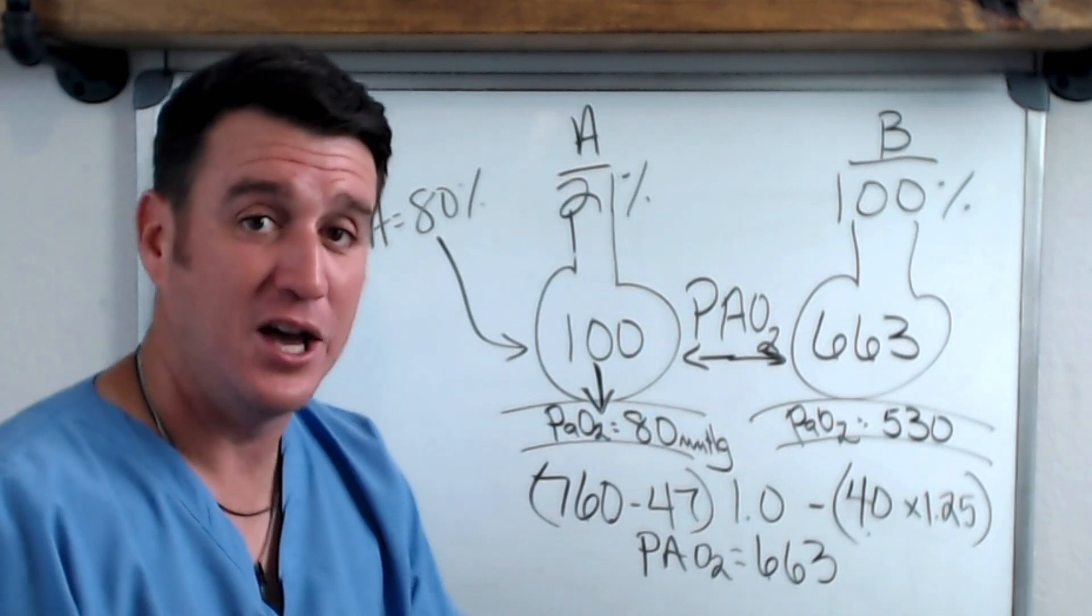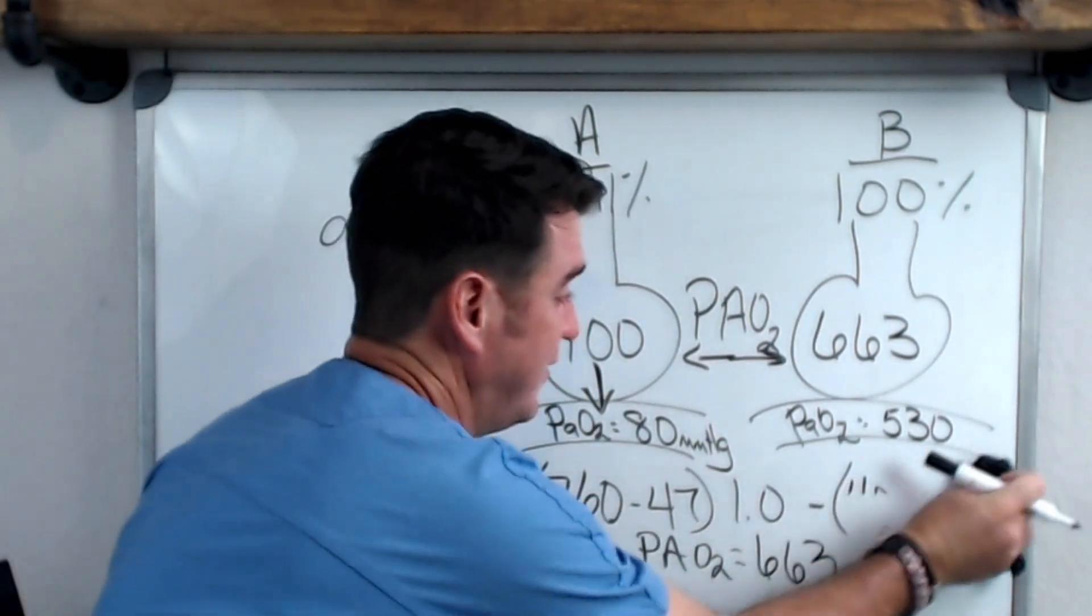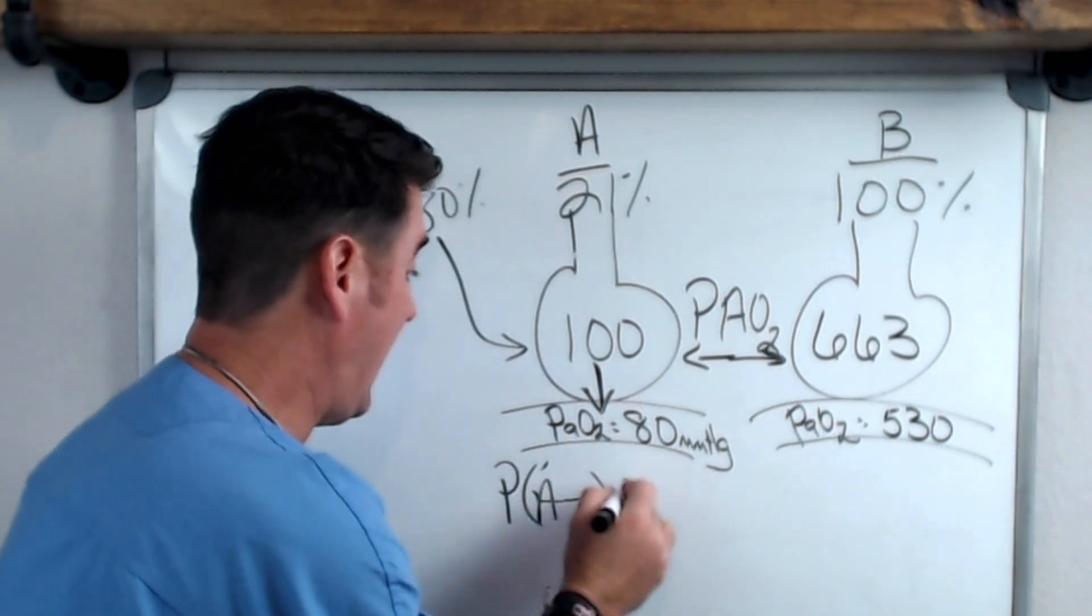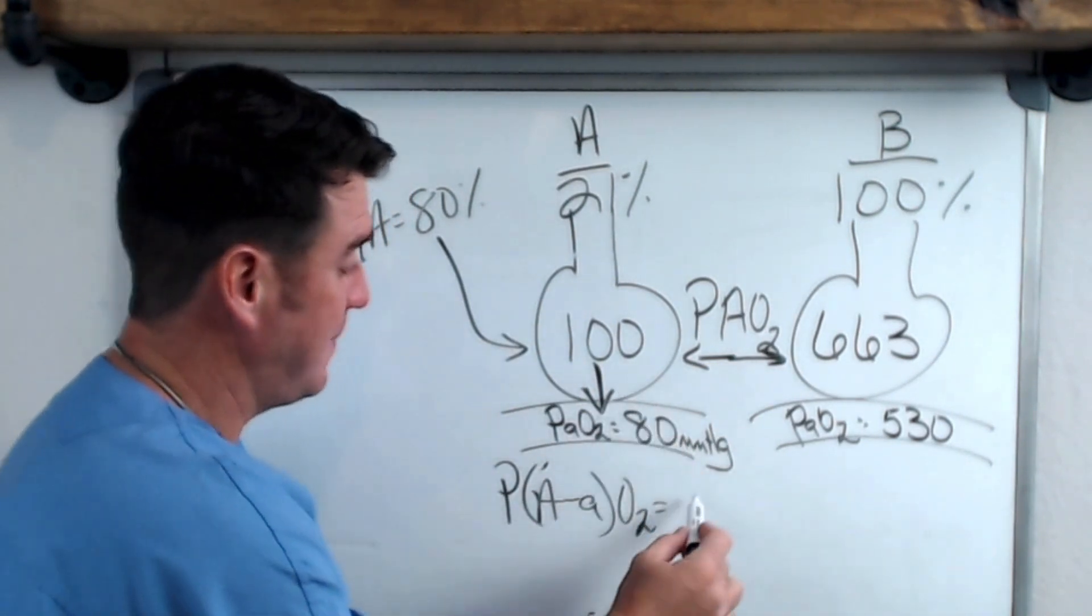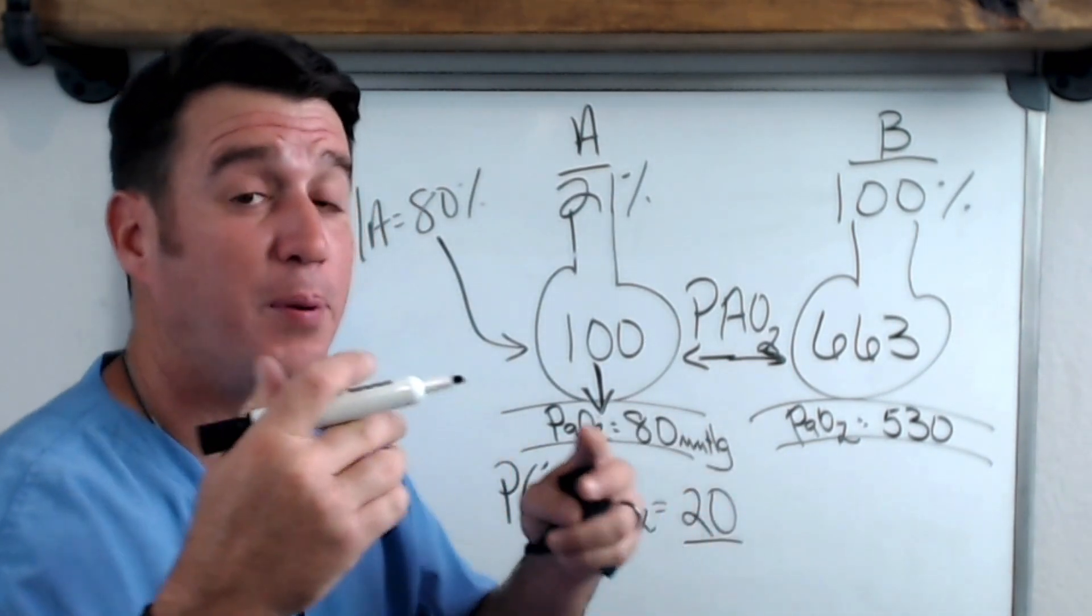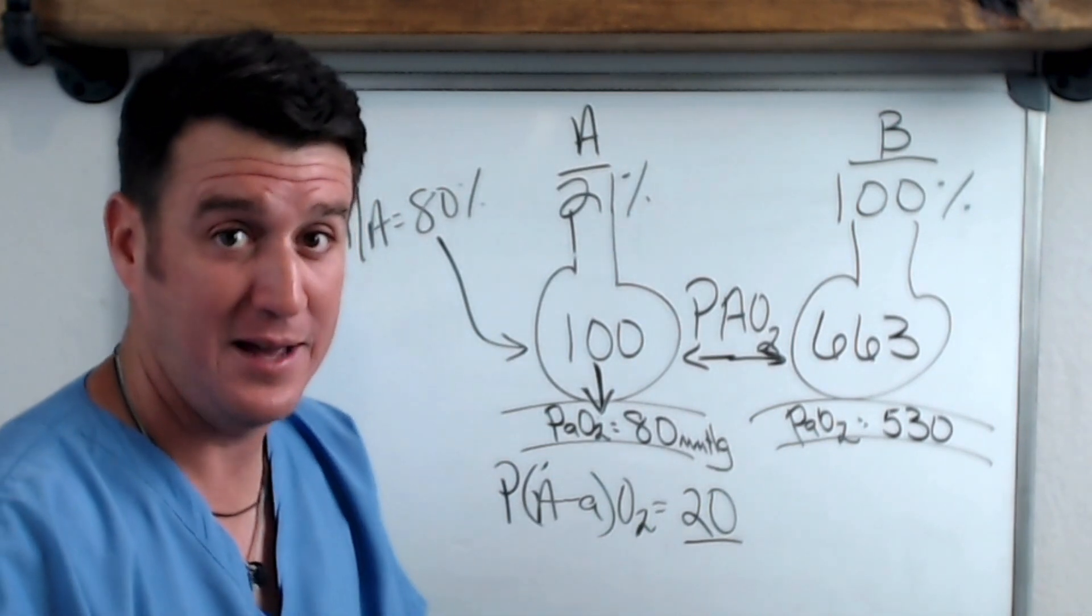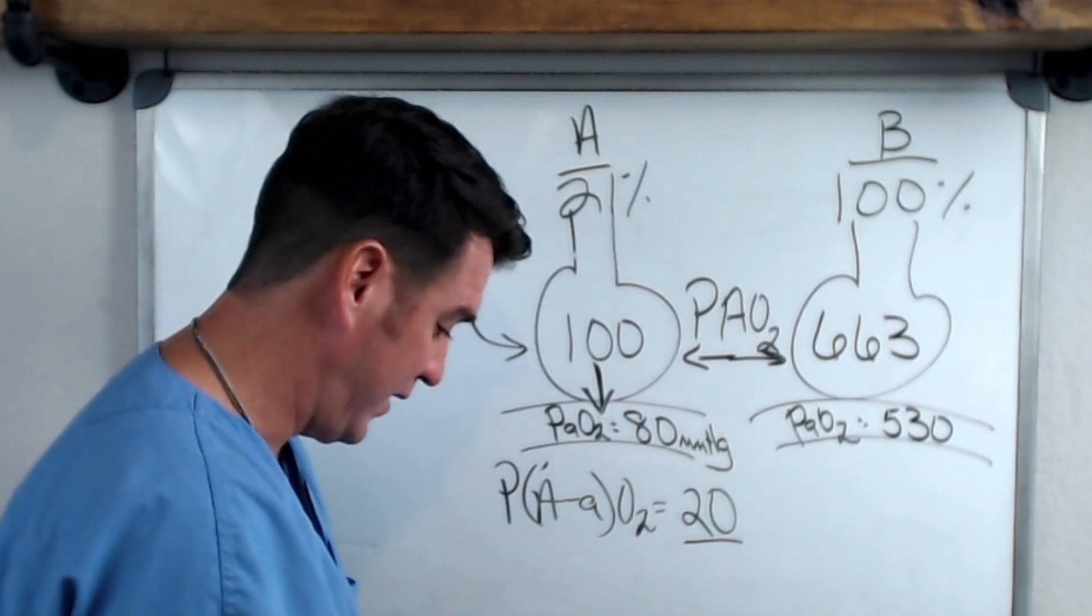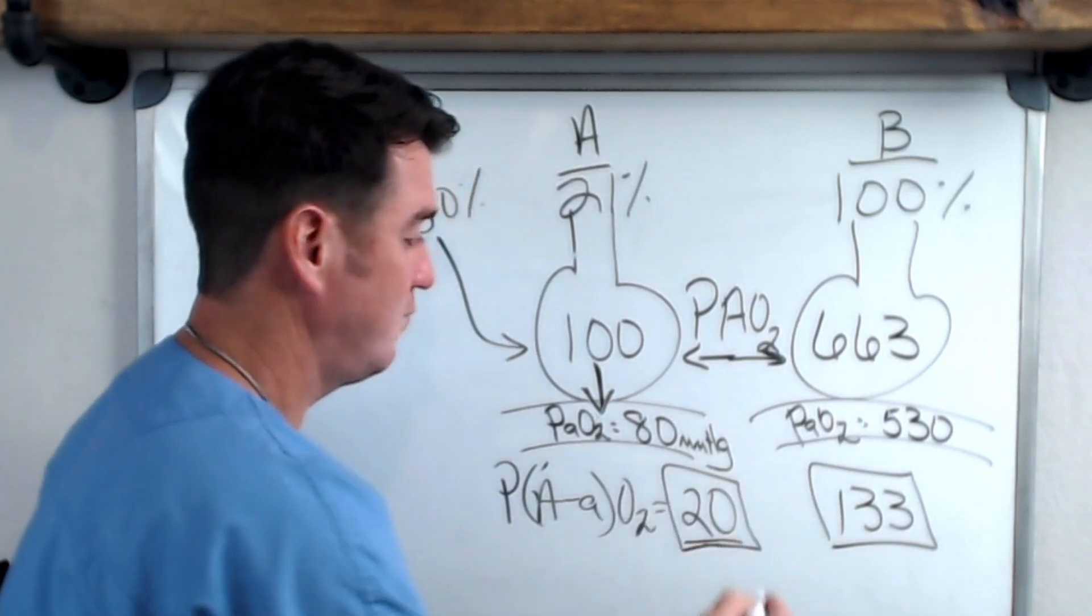Now here's the answer to your question: why is the A-a difference greater in the patient breathing 100% than 21%? Let's look at it. If we ask ourselves what is our A-a difference for patient A and patient B, then here's what we find. Patient A is 20 millimeters of mercury. That means that 100 was in alveoli partial pressure, in the arterial, that's the difference of 20. Now when we come over here and we do 663 minus 530, we see here that our A-a difference is 133.